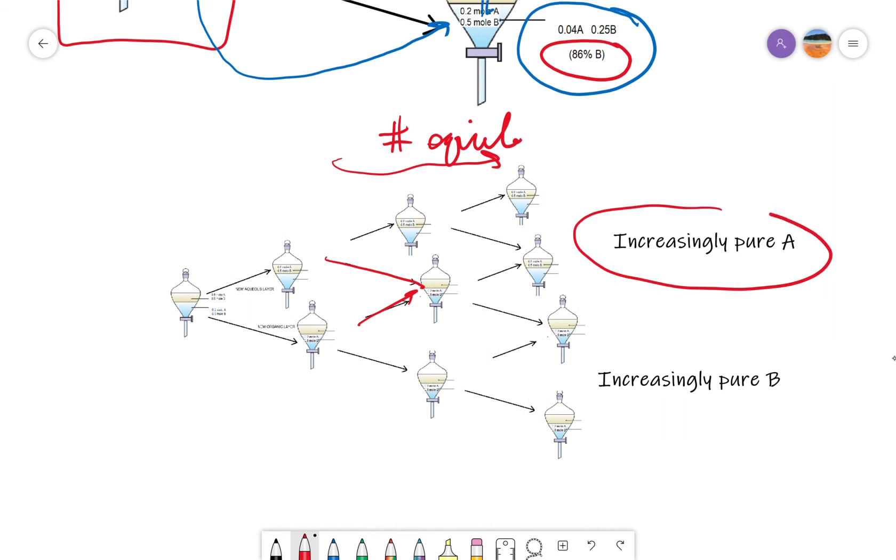The upper layer will become increasingly pure in A, the lower layer will become increasingly pure in A. A will always be a little bit soluble. B will be even more soluble. Eventually, you could, if you kept track of all your funnels, actually separate A and B.